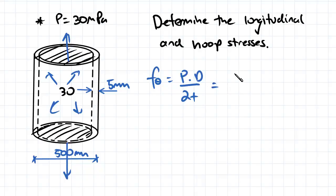So just sub in all of your values. We've got 30 as our pressure multiplied by our diameter of 500 millimeters divided by 2 times our thickness of 5.